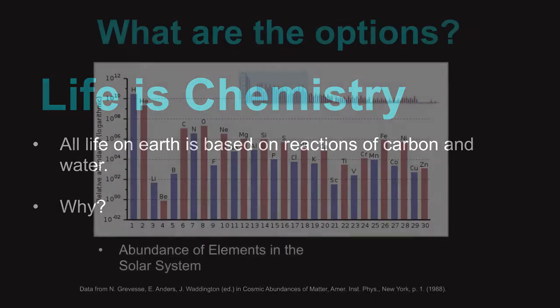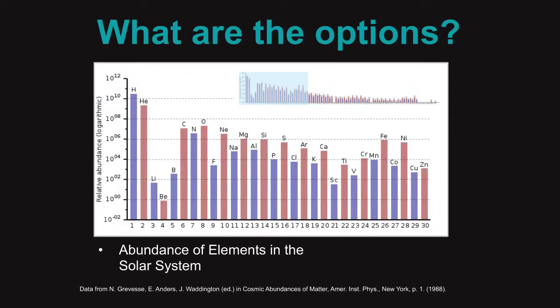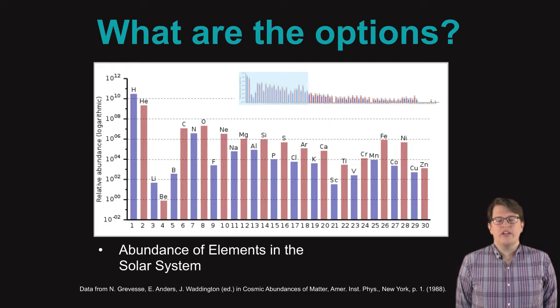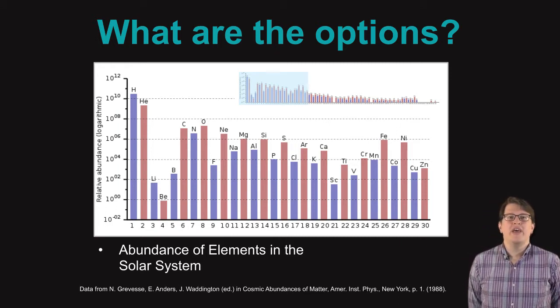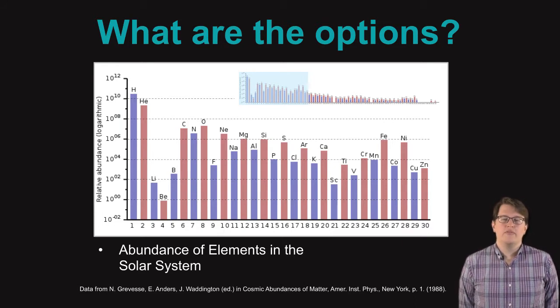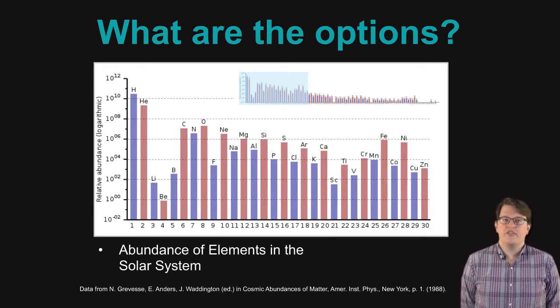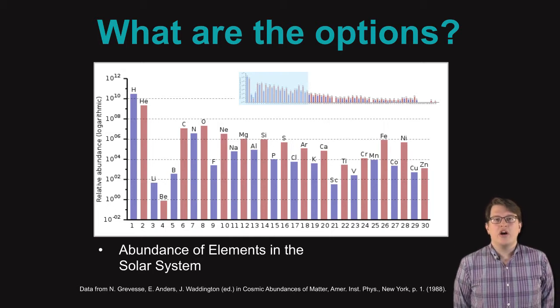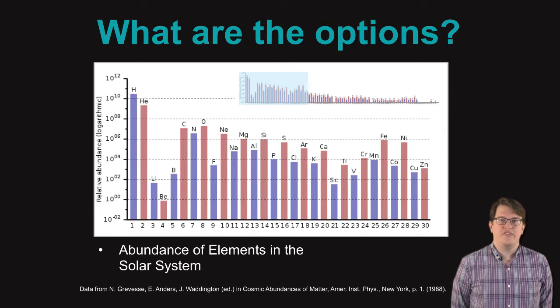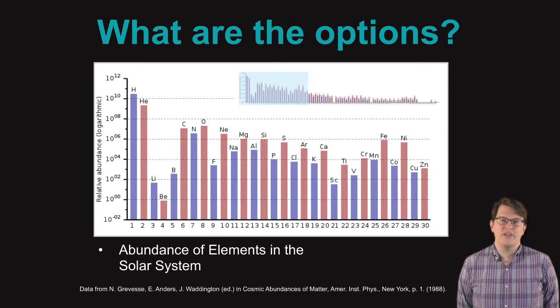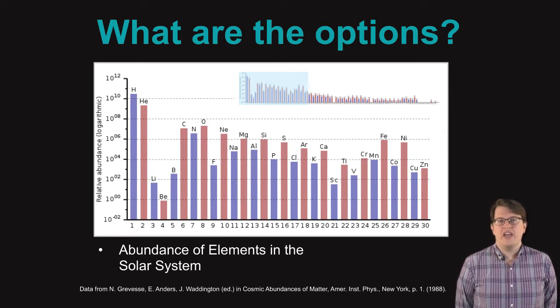The first thing we need to understand to begin to answer this question is, what are the options? What I'm showing here is just a chart of the abundance of elements in the solar system. You can see that carbon, as well as hydrogen and oxygen, the two elements that make up water, are all relatively high abundance in the solar system. This is a consequence of the elements that are produced by the sun and the elements that were available when the solar system was formed.